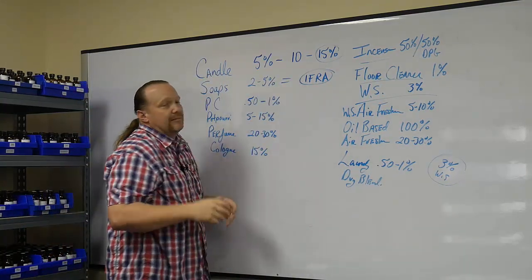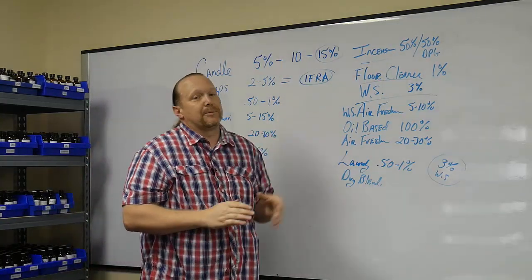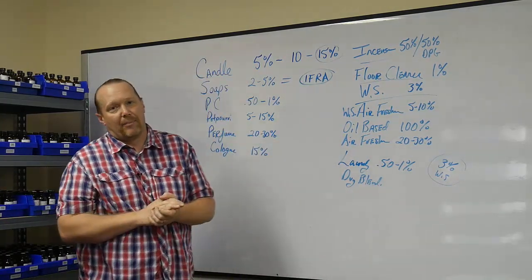10%, you'd still be good. Strong candle, no issues. 15%, you're going to have leaching. You're going to have stuff falling out. You're going to have problems.